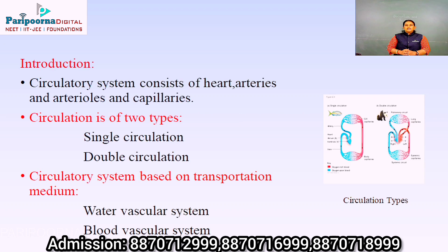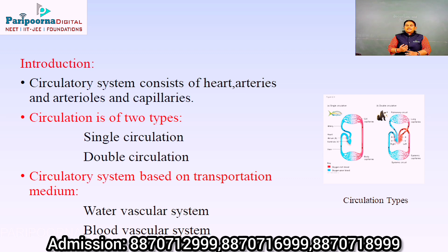The introduction of this chapter includes the circulatory system, which comprises your heart, arteries, arterioles, and capillaries. An artery is a vessel which carries oxygenated blood from the heart to all parts of the body. Veins carry deoxygenated blood from the body back toward the heart for purification.